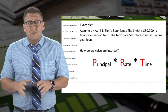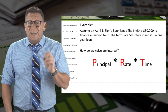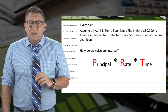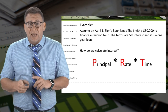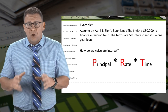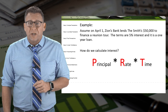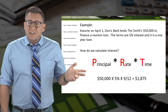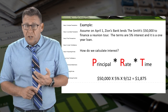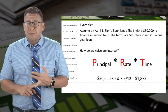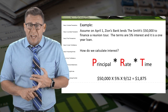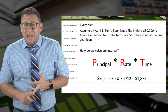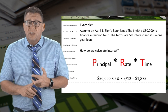Please note that the interest rate is always an annual rate, so we need to make sure that time is always in terms of one year. In this example, the principal is $50,000 times 5% annual interest times 9/12 of the year.